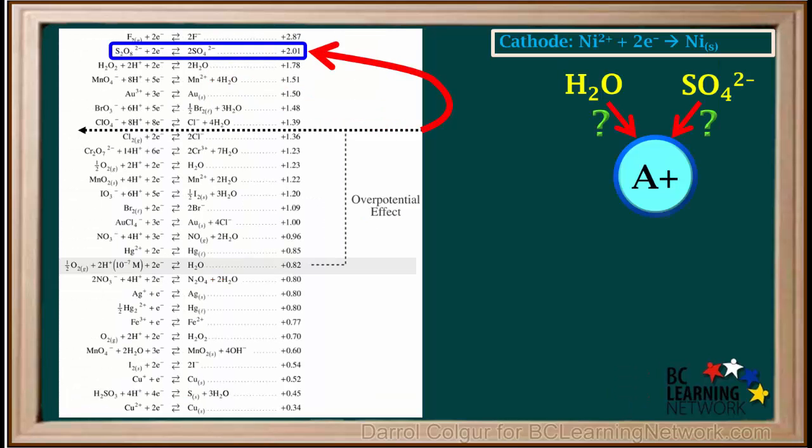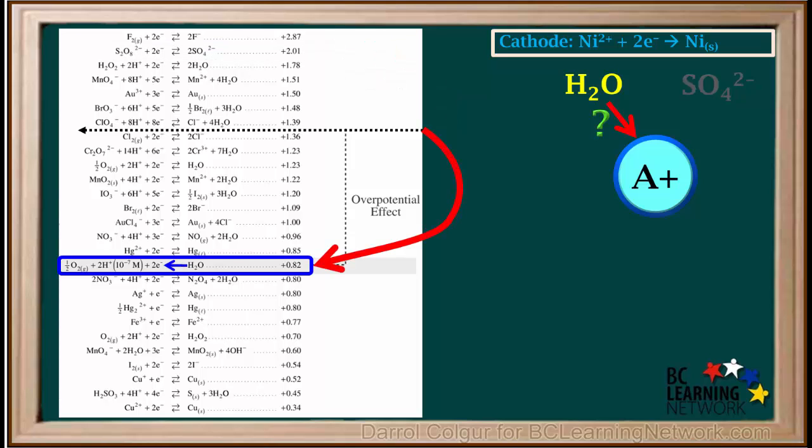We see that the sulfate ion is above the overpotential arrow on the right. This means that sulfate will not be oxidized when water is present. Instead, water will be oxidized by the reverse of this half reaction. And this question mark by water can be replaced by a check mark.